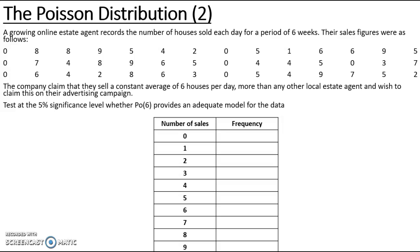By doing a quick count I can see that I have seven zeros, one number one, three number twos, two number threes, six number fours, seven number fives, five number sixes, three number sevens, four number eights, and four number nines. I have just put that into a quick frequency table.